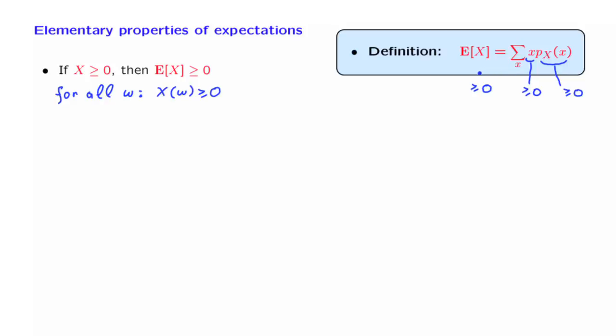The next property is a generalization of this. Consider now a random variable that has the property that, no matter what the outcome of the experiment is, the value of this random variable lies in the range between two constants, a and b.